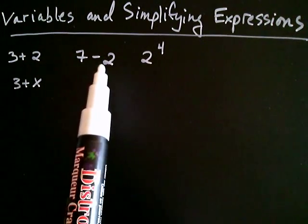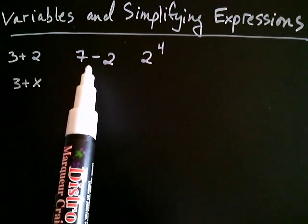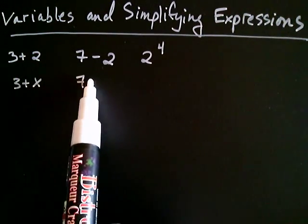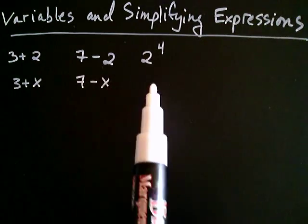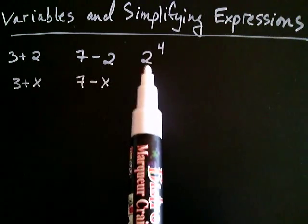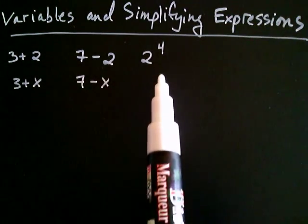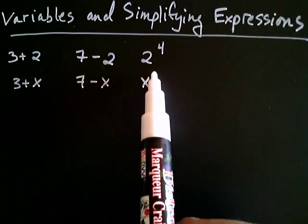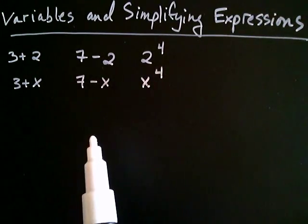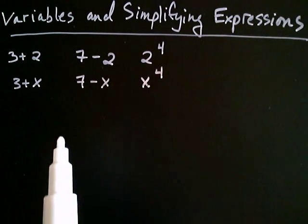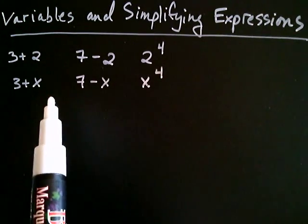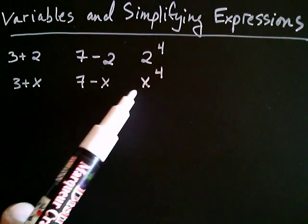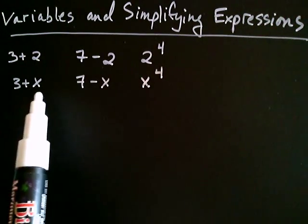Likewise I can subtract — I can take two away from seven, and so I can also take x away from seven. And likewise I can take two and raise it to the fourth, so I can also take my unknown number x, whatever it is, and I can raise it to the fourth power. So these are examples of working with algebraic expressions involving what are called variables.